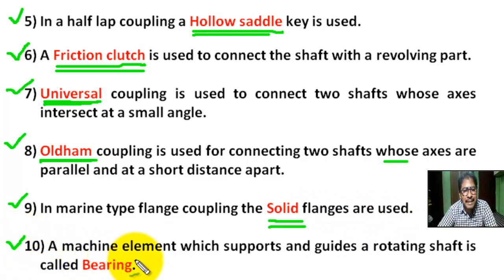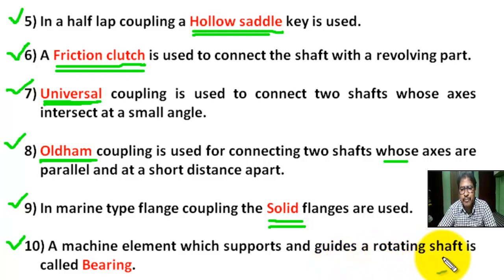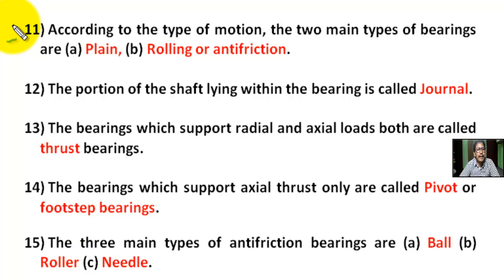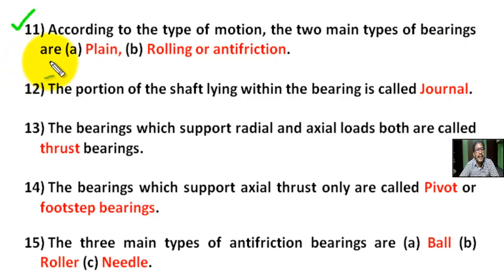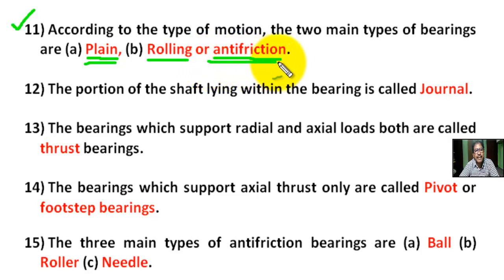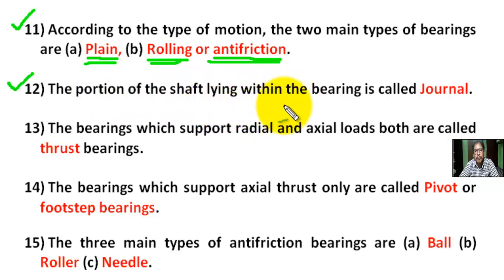Question number 10: A machine element which supports and guides a rotating shaft is called a bearing. Question number 11: According to the type of motion, the two main types of bearings are (a) plane bearing and (b) rolling or anti-friction bearing. Question number 12: The portion of the shaft lying within the bearing is called a journal.